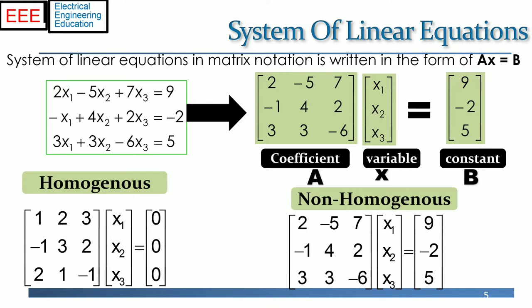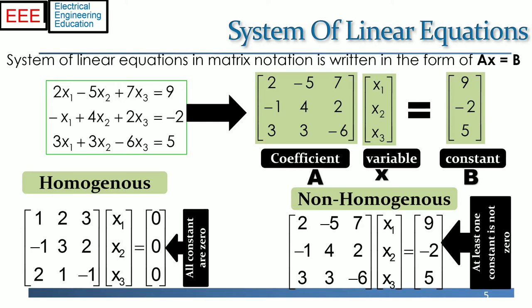A system of equations can be consistent or inconsistent, which means a system Ax = b is consistent if there is a unique solution or infinite solutions, and it is inconsistent if there is no solution. Many solutions can be obtained if one equation is a multiple of the other.